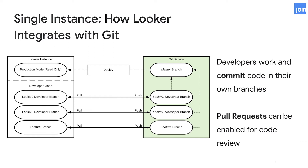Development is performed by LookML developers who make changes in their dev mode, which can either be a personal or shared branch for collaboration. When developers are finished making changes to the project, they may then create a pull request, have that code reviewed, and deploy those changes to the production branch, at which point it's then visible to all business users.